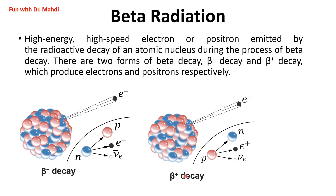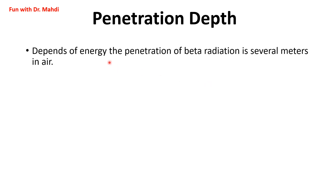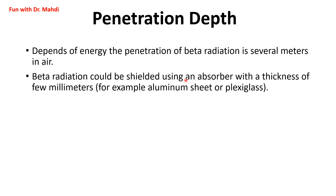In beta positive decay, it occurs in an unstable atomic nucleus with an excess of protons. In this case, a proton is converted to a neutron, a positron — which has the same mass as an electron — and an electron neutrino. Penetration depth for beta is more than alpha and depends on energy. Beta radiation penetrates several meters in air and can be shielded using an absorber a few millimeters thick, such as an aluminum sheet or plexiglass.